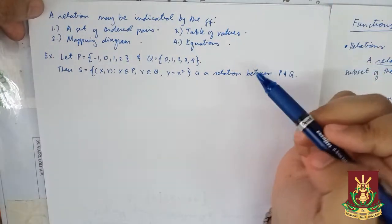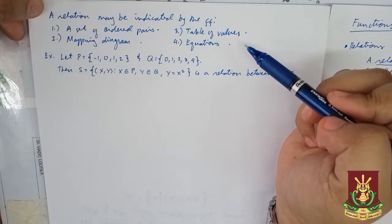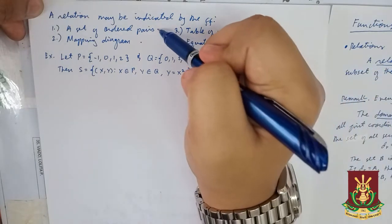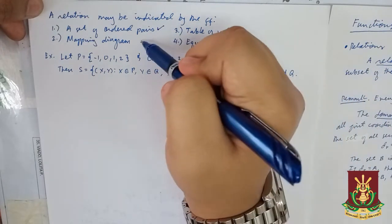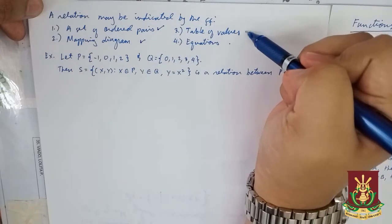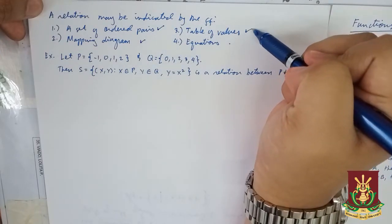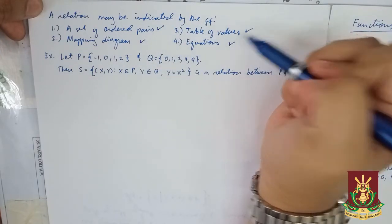A relation may be indicated by the following: a set of ordered pairs, a mapping diagram, a table of values, and by equations.